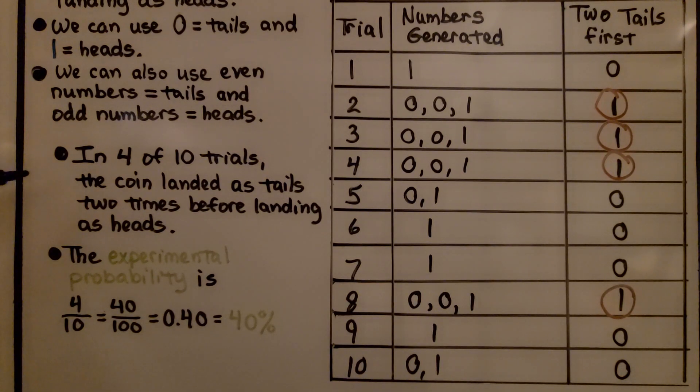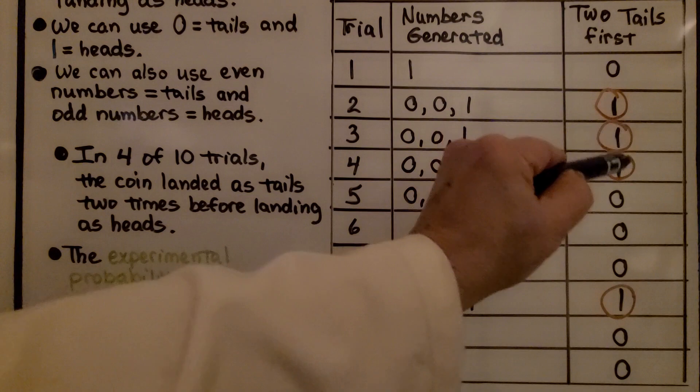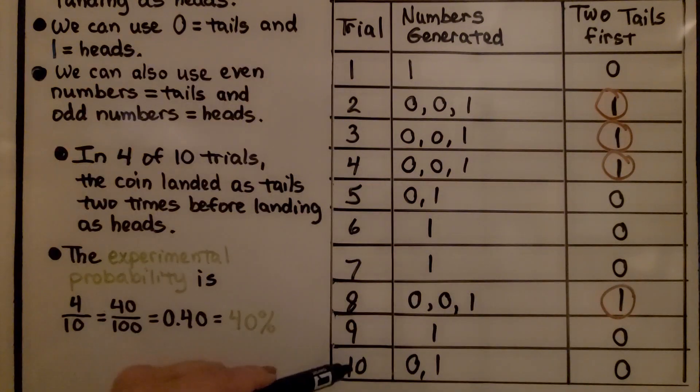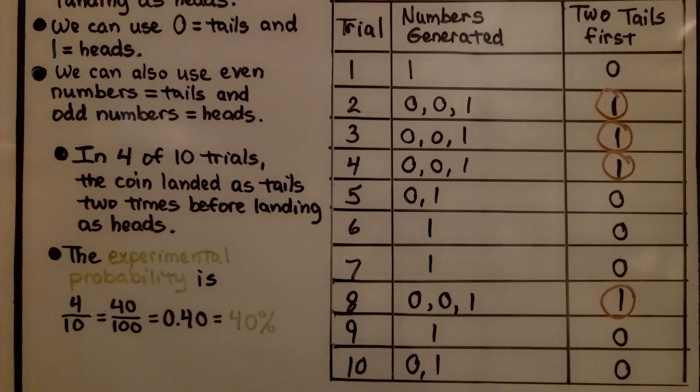So, in 4 of 10 trials, the coin landed as tails 2 times before landing as heads. The experimental probability is 4 tenths, which is 40 hundredths, which is 0.40 as a decimal, which is equal to 40%.